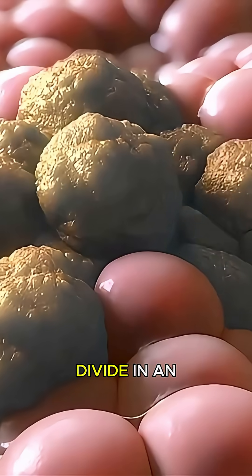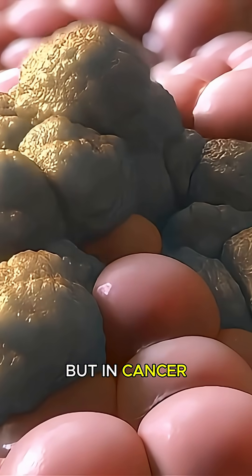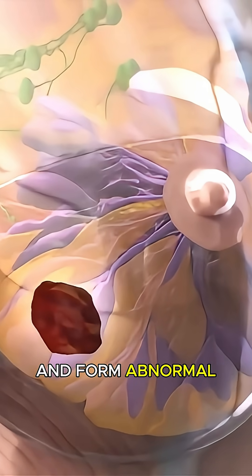In a healthy body, cells grow and divide in an orderly way, but in cancer, some cells start to multiply rapidly and form abnormal tissue.